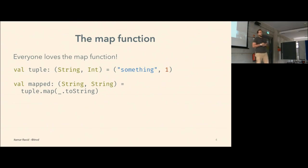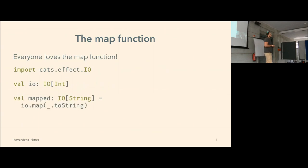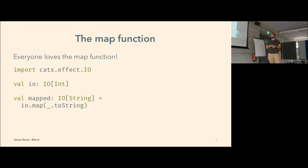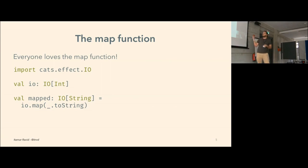And of course, given an IO computation — using the IO Monad from Cats Effect — we can also apply a map function to apply a function to the value produced by the IO computation and convert that integer to a string.